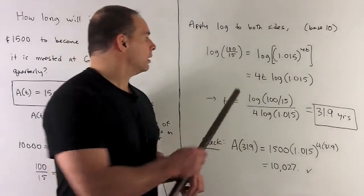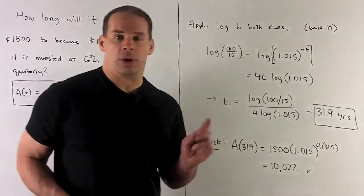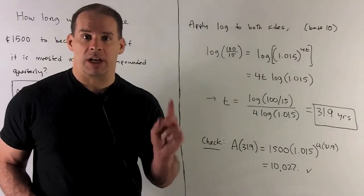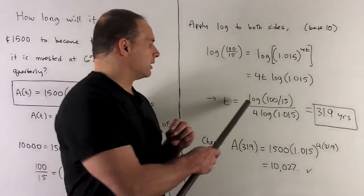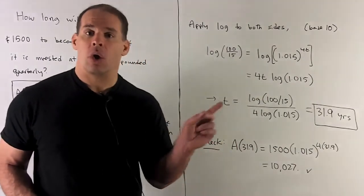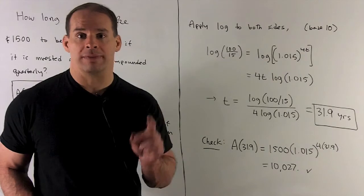So now I have 4t log of 1.015, and this is just algebra. So we can isolate the t log of 100 over 15 over 4 times log 1.015.